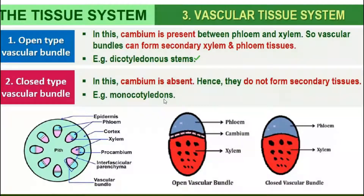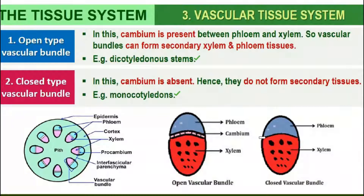This diagram helps understand more clearly. Open vascular bundles have cambium present between xylem and phloem. Closed vascular bundles have no cambium. Closed vascular bundles are present in monocots.